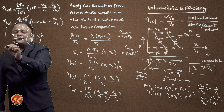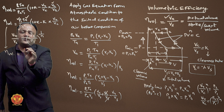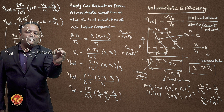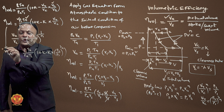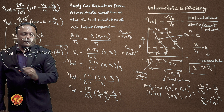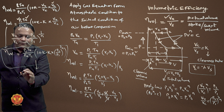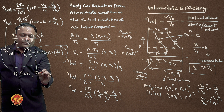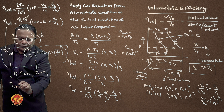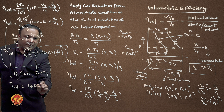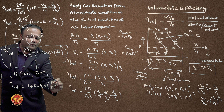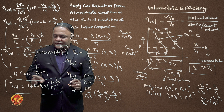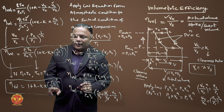Substituting V4/VC into the formula, the volumetric efficiency becomes: (P1 × TA) / (PA × T1) × [1 + K - K × (P2/P1)^(1/N)]. This is the developed volumetric efficiency formula. If we assume P1 = PA and T1 = TA, then the simplified formula becomes: 1 + K - K × (P2/P1)^(1/N). This simplified formula is generated when atmospheric condition equals normal temperature pressure condition. Today we derived the formula for volumetric efficiency.